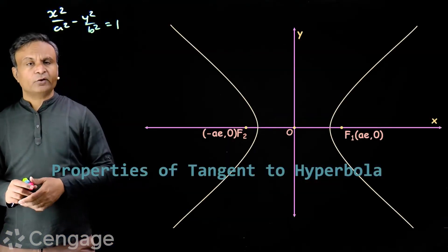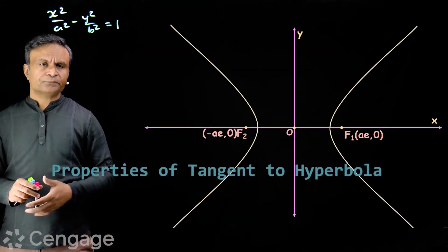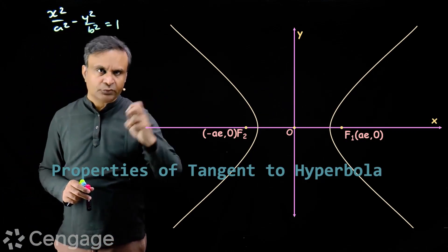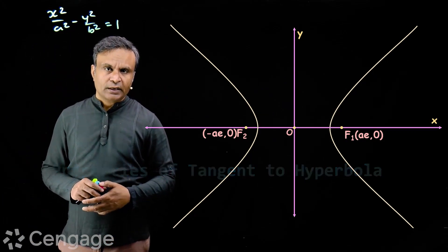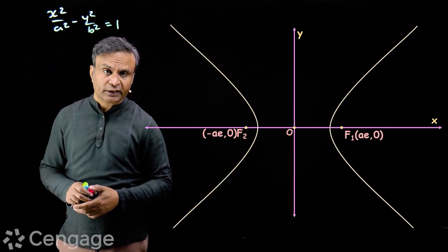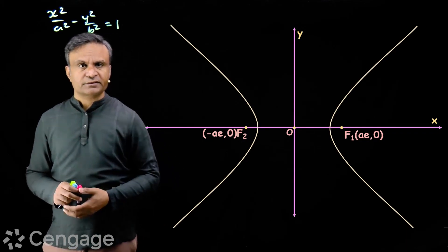Now we have a very distinct property of tangent to hyperbola and this will spell out the reflection property of hyperbola. Hyperbola ka reflection property kya hota hai? Ham is property se samazhte hai.